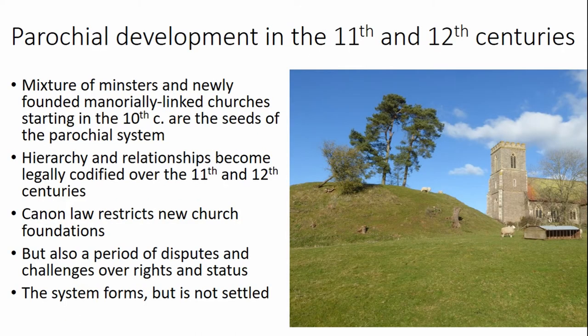In England, parochial rights and structures undergo a really intense process of change in the 10th, 11th, and 12th centuries, evolving from the early minster-based system to the familiar parish framework of the later Middle Ages which still more or less exists today. The general pattern shows the establishment of minster churches in the 7th to 9th centuries, and then in the 10th century that system begins to break up as a large number of local churches tied to manors and settlements sprang up and eventually challenged the old minsters for rights of pastoral care, patronage, tithes, and congregations.